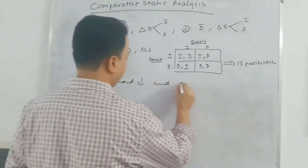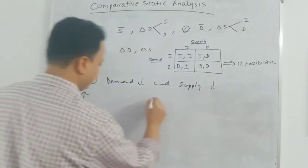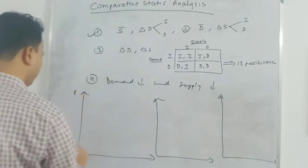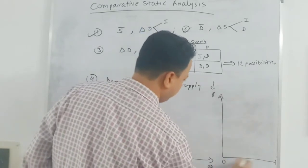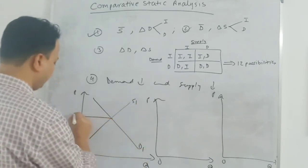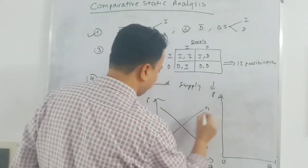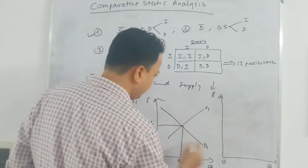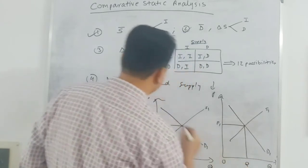Fourth case: demand decreases and supply also decreases. Drawing three graphs with price, origin, and Q on the axes. D1 is my initial demand and S1 is my initial supply, with the initial equilibrium at P1, Q1 in each graph.